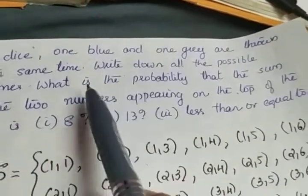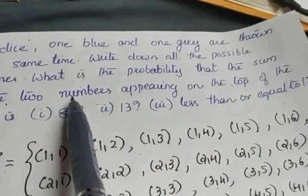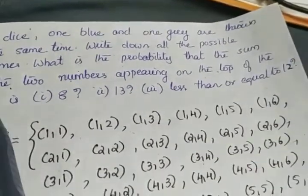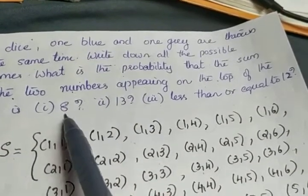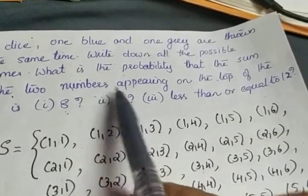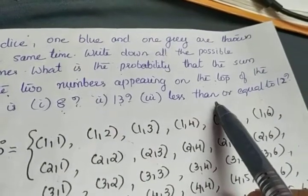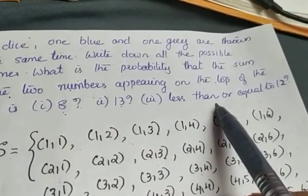And what is the question? What is the probability that sum on the two numbers appearing on the top of the dice is 8? First part is to find the probability that the sum is 8. Second part is to find the probability that the sum is 13. And the third part is to find the probability that the sum is less than or equal to 12.